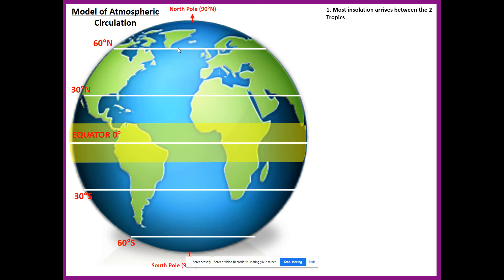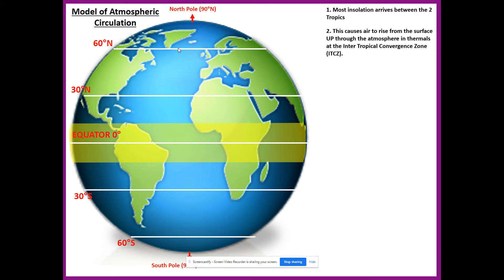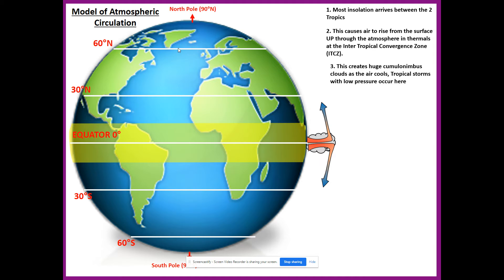Here on our diagram the equator is highlighted — the part of the Earth where we have most solar energy arriving. At the equator the air is warmed due to that high amount of energy from the sun. As the air is warmed it rises up into the atmosphere in a movement known as thermals. As the air rises it starts to cool down, condenses, and forms enormous clouds known as cumulonimbus clouds. Eventually they can't hold all that moisture and deposit it as intense rainfall.